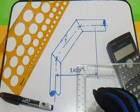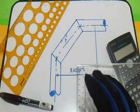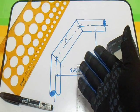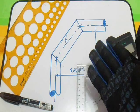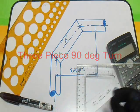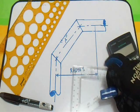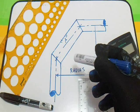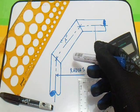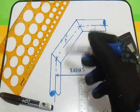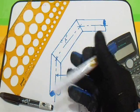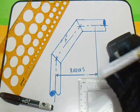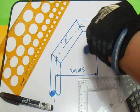Hi guys, thanks for watching and subscribing. We have a 90-degree turn here — this 3-piece 90-degree turn. A 45-degree turn: this 45-degree turn equals two times 22.5 degrees.